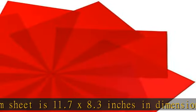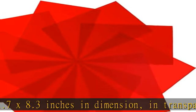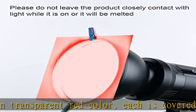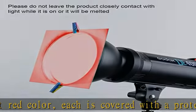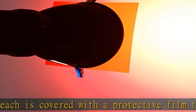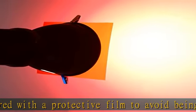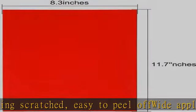Also suitable for memory albums, scrapbooks, and various other art projects. Can improve clarity and eye movement control, and helps kids with dyslexia reduce reading frustration. Quantity: 9 pieces of gel light filters in total, enough for using. Note: please do not leave the product close to the light while it is on, or it will be melted.